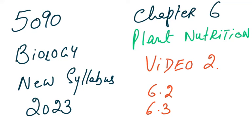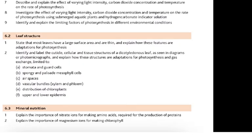Bismillahir Rahmanir Rahim. 5090 Biology New Syllabus 2023, Chapter 6: Plant Nutrition. This is the second video, which will explain sections 6.2 and 6.3 and the remaining part of 6.1. In this video we will first talk about describing and explaining the effect of varying concentration, light intensity, carbon dioxide, and temperature on the rate of photosynthesis — specifically part 9: identify and explain limiting factors of photosynthesis.